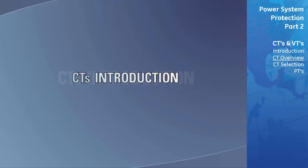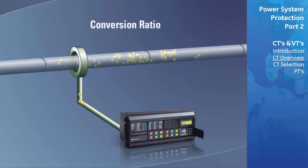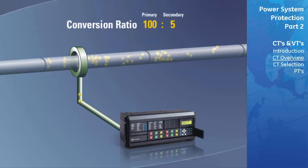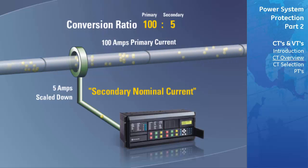The function of a current transformer, or CT, is to take a current flowing through a wire or cable and step it down to a magnitude that a protective relay can measure. A primary characteristic of CTs is their conversion ratio. In this example, our conversion ratio is 100 to 5, meaning that if 100 amps are passed through the primary phase wire, the CT will scale this down to 5 amps and direct it to the relay via the secondary windings. The 5-amp measure is known as the secondary nominal current.